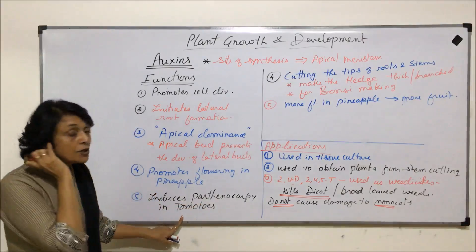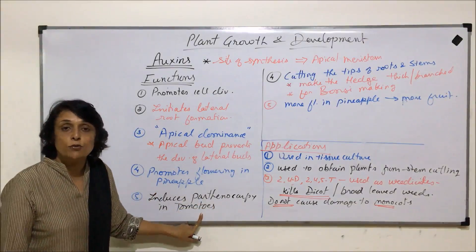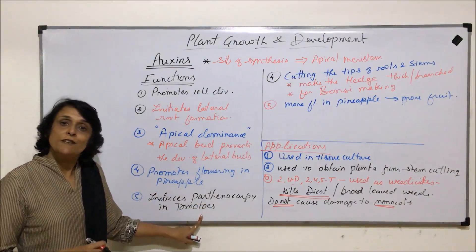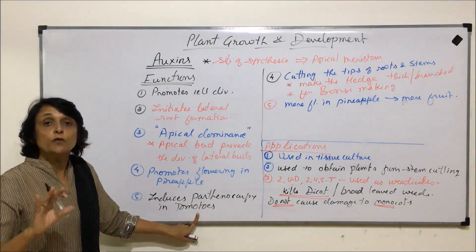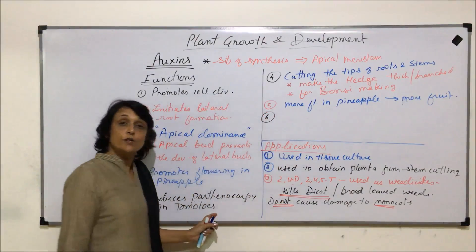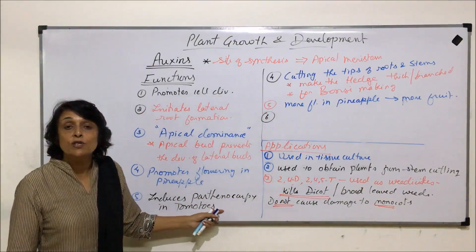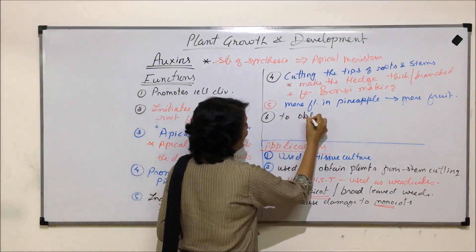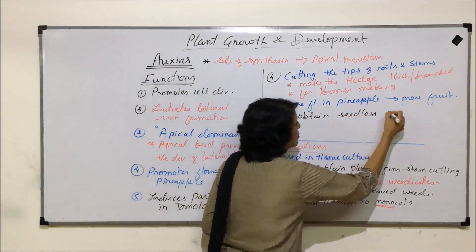One more function is that auxins induce parthenocarpy in tomatoes. Parthenocarpy is fruit formation without fertilization. When fruits are formed without fertilization, those fruits are seedless. So auxins are used to obtain seedless fruits in tomatoes.